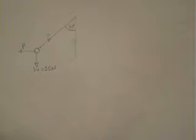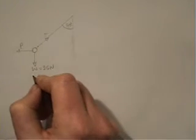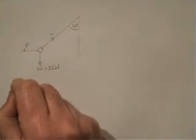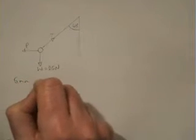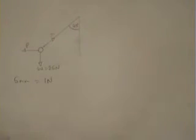Before we can draw the triangle we need to have a suitable scale. I think that if we have 5mm representing 1N then the vector for the weight would be 125mm.